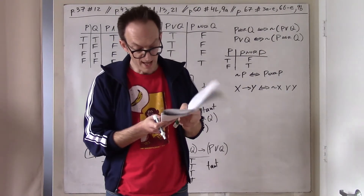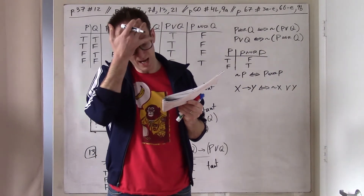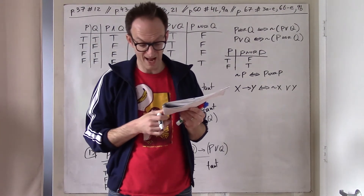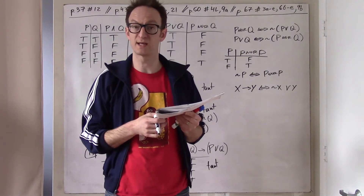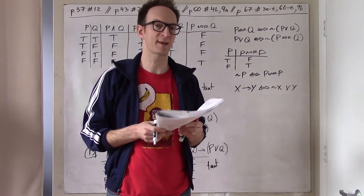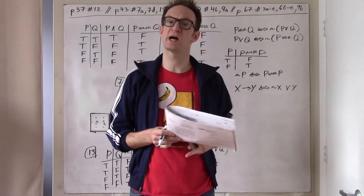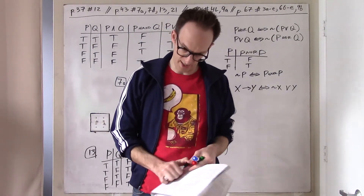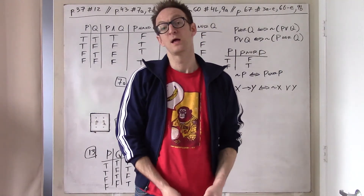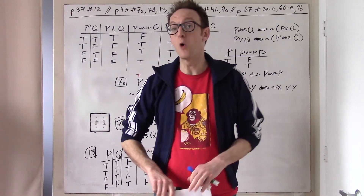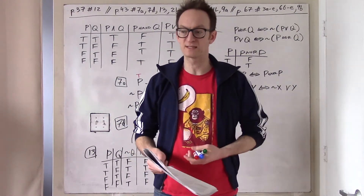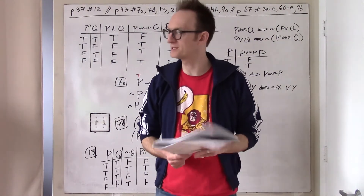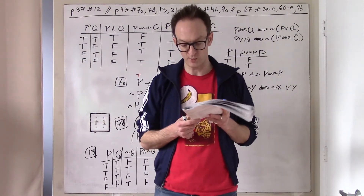Problem 21. Suppose the final column in the truth table for a statement contains an F. Then the statement is not a tautology, but is a contradiction. It's not a tautology, but it doesn't make it a contradiction — a contradiction being a sentence that is always false. If there's a single F, it just means it's not a tautology. Therefore 21A: false.